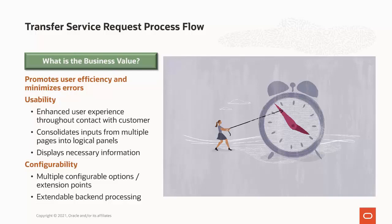For usability, the call center agent has an enhanced experience throughout their entire contact with the customer — from when the customer first calls and the agent identifies and verifies them, through to gathering the required information to process a request. To help collect all required information efficiently, we consolidate it into logical panels or steps within a process flow. This information is then applied to the relevant customer-related records such as person, account, service agreement, and/or premise records. Only the necessary information is presented on the panels.